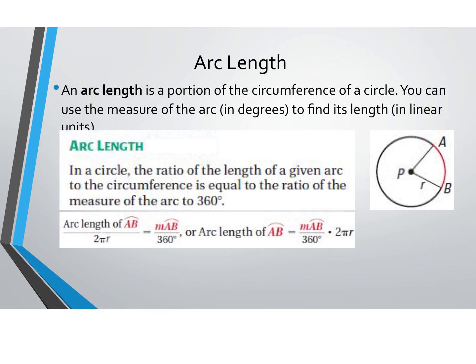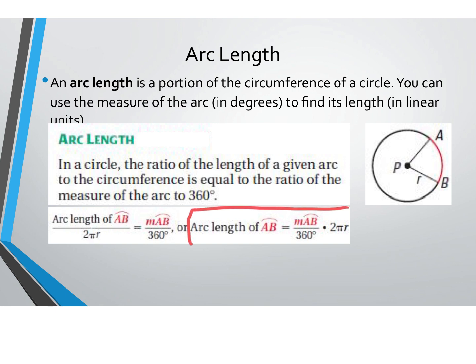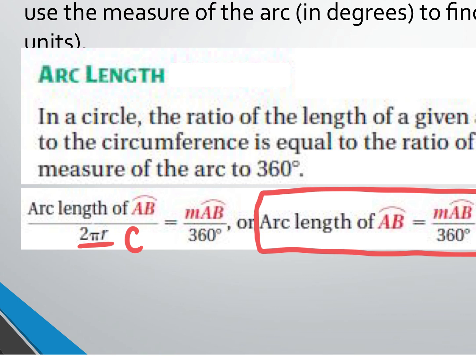The formula I want you to box in is on the right-hand side. This formula comes from taking the length of an arc AB divided by the whole length of the circle — which is 2πr, the circumference. Do you agree that 2πr is the circumference, and that the circumference is the distance all the way around the circle?